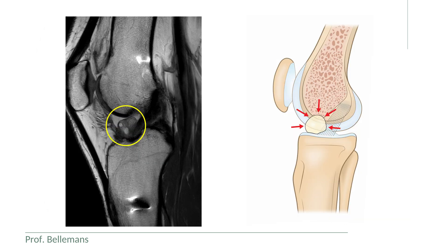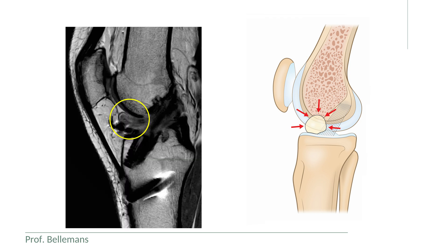Here you see a typical example on MRI. It is important to know, however, that the shape of the scar tissue can also be more scattered and not really rounded, but it is still called a cyclops lesion. Here you see an example of a more flattened cyclops.